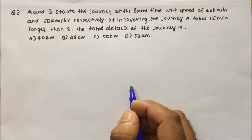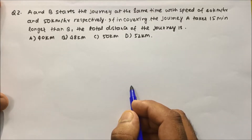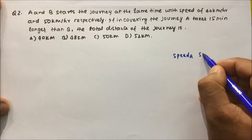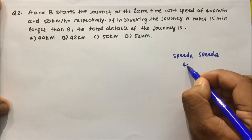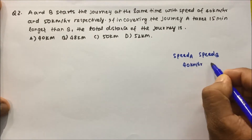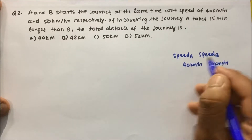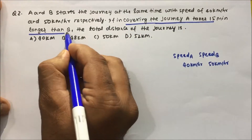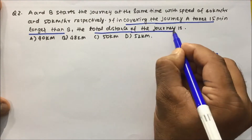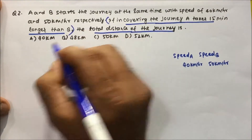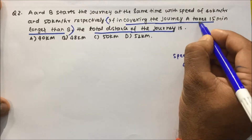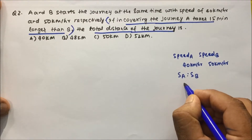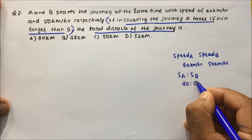Question 2: A and B start a journey at the same time with speeds of 40 km/h and 50 km/h respectively. If in covering the journey A takes 15 minutes longer than B, then the total distance of the journey is? The data is given in terms of time. Speed of A to speed of B is 40 to 50, or simplified, 4 is to 5.